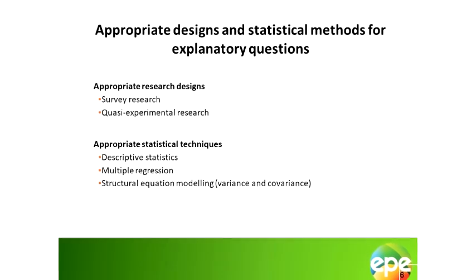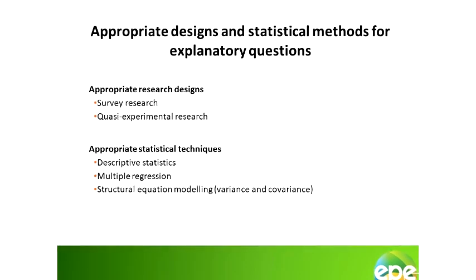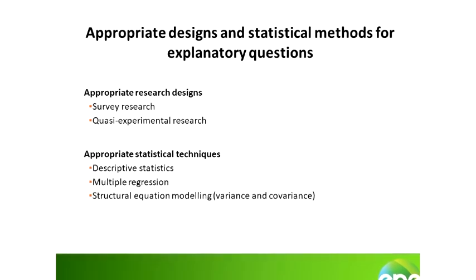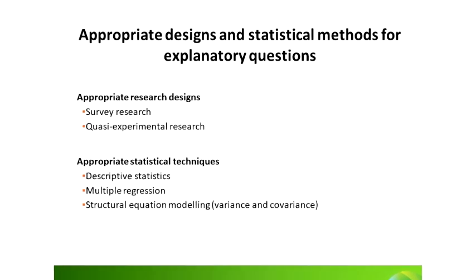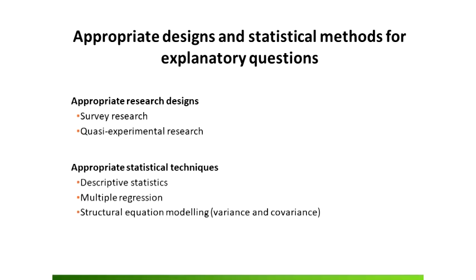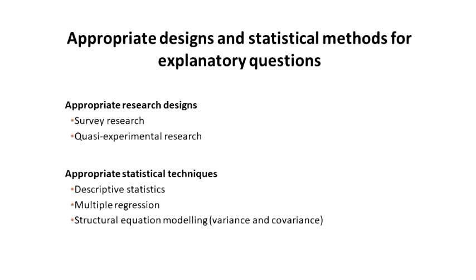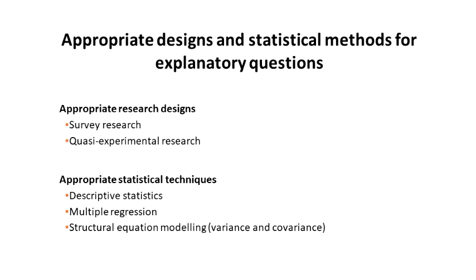If your research aim is explanatory in nature, then you would like to answer the question of why something is happening. The most appropriate research designs will still be quasi-experimental research and survey research. With explanatory research, you would like to know why certain variables actually explain a particular outcome — why are some employees more productive than others, why are some employees more satisfied with their jobs than others.